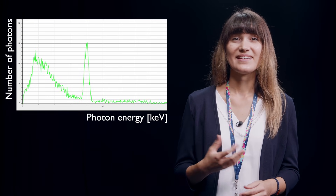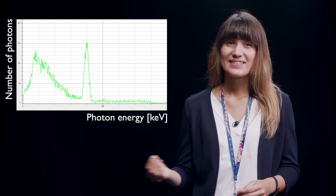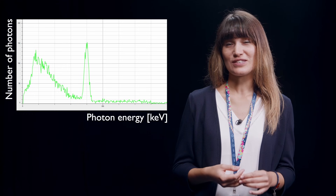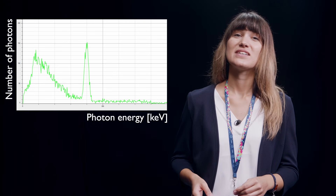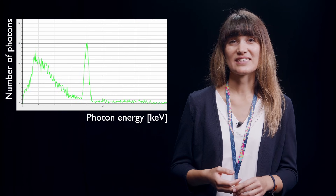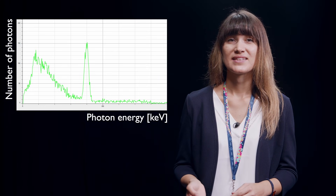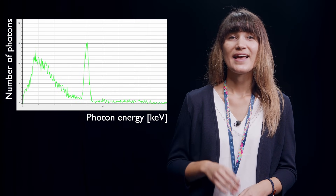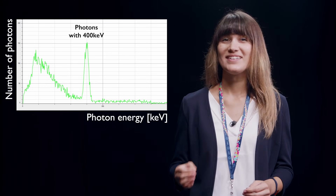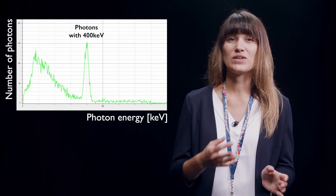In the output diagram, you can see on the x-axis what energies the detected photons have, and on the y-axis how many photons were detected for the different energies. In this example, there are many detected photons with an energy of 400 keV.